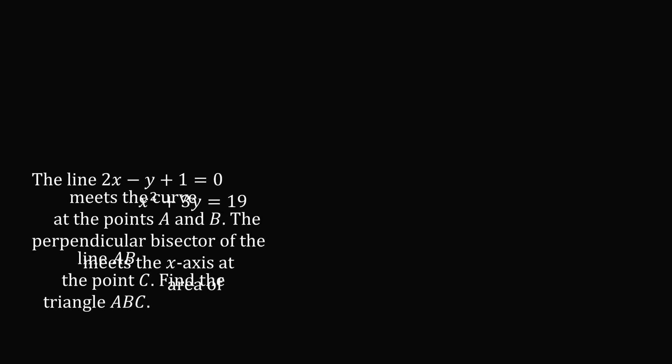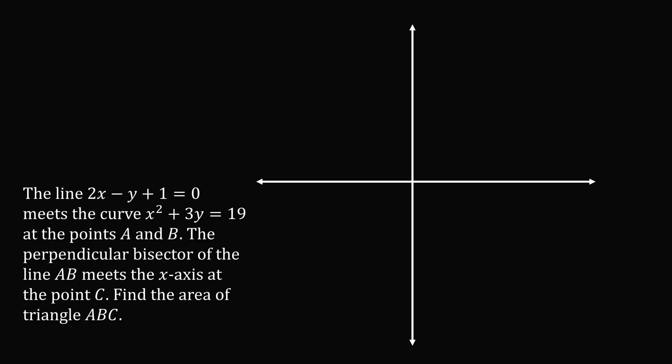To work this question out, let's sketch the line and the curve. So 2x minus y plus 1 equals 0 is a line. Let's solve for y. We'll add y to both sides of the equation to get 2x plus 1 equals y.